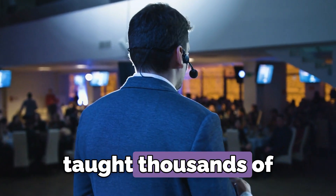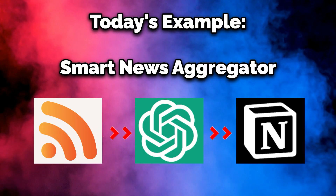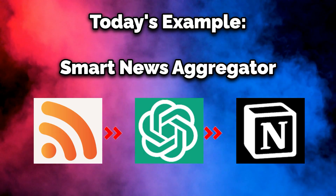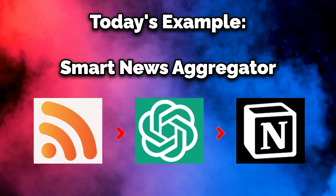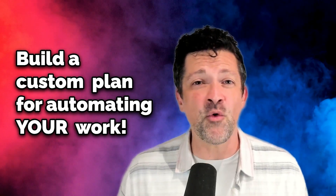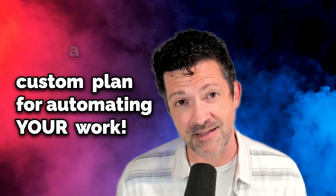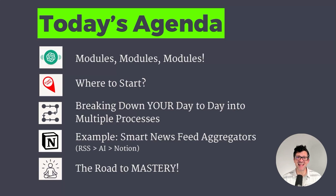In the past year, I've taught thousands of people how to automate their processes using AI. In today's example, I'm going to show you how to build a smart news aggregator that goes out and finds the news that you care about, summarizes it, and drops it in whatever tool that you want. This is how I keep up with everything that's flying at me every day. Make sure to stick around to the end of the video where I show you how to build a custom learning plan for automating your unique processes. This is basically the Make.com tutorial that I wish I had as a young automator.